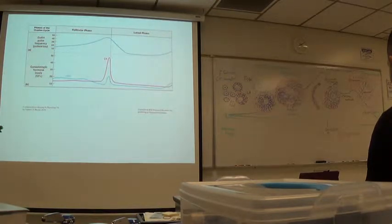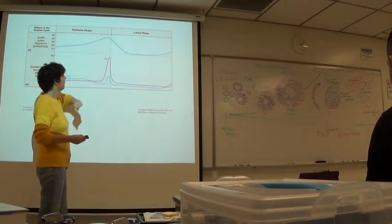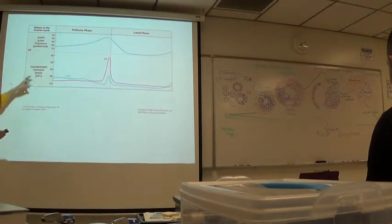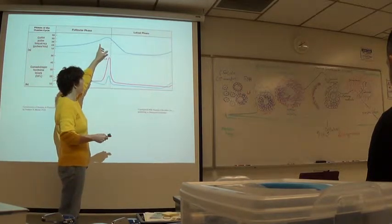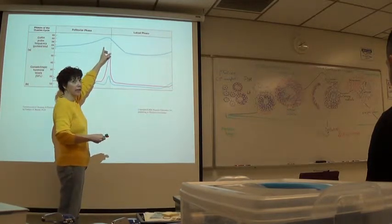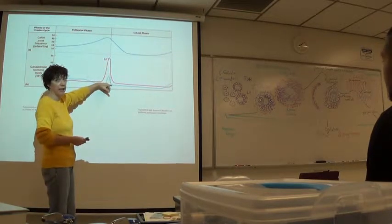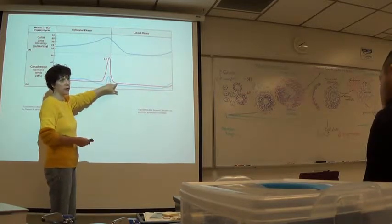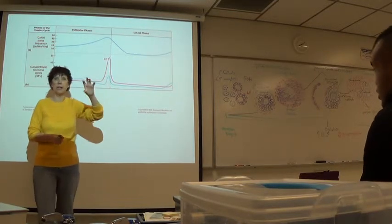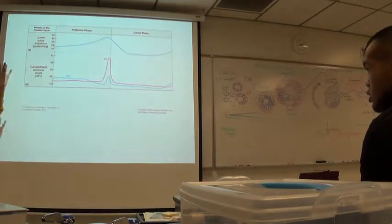Here's the spike in LH as a result of the rise in GnRH. We have the rise in estrogen having a positive feedback on GnRH. That results in a small spike in FSH but a very large spike in LH, which increases the pressure of fluid within the antrum, and it results in ovulation.